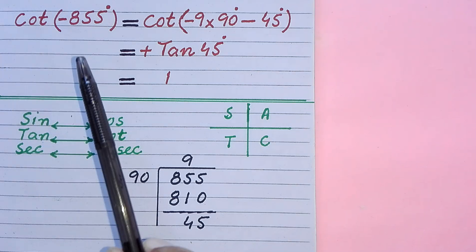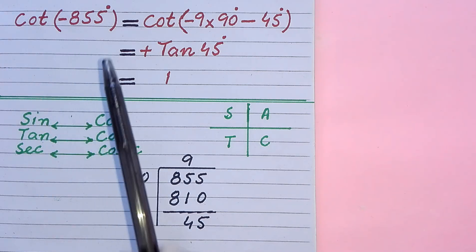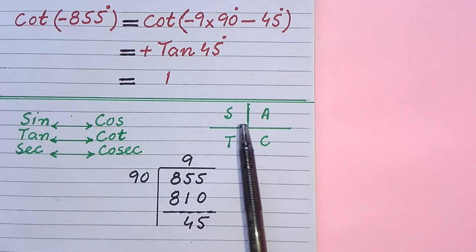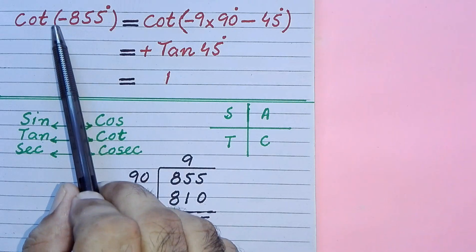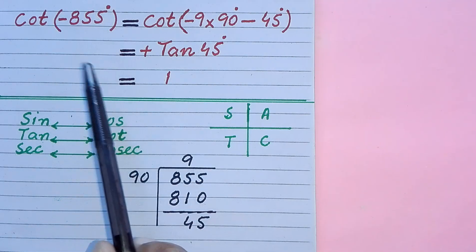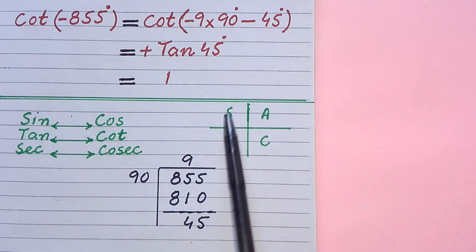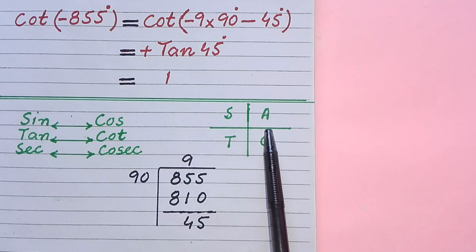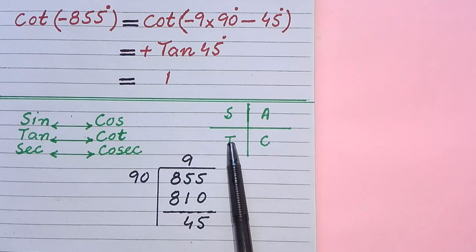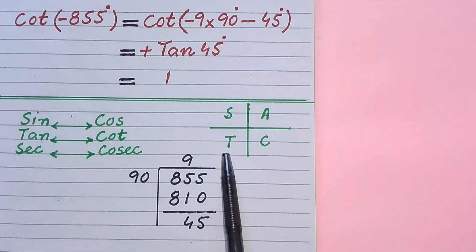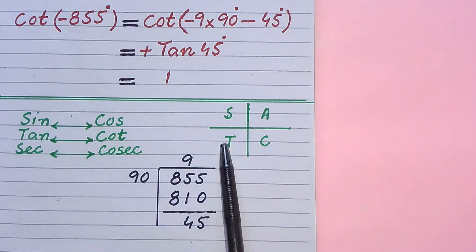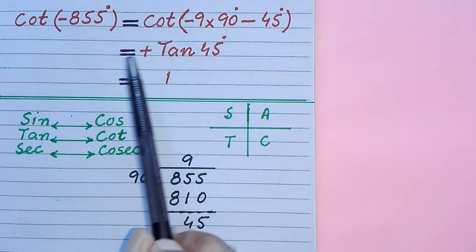First we decide about the sign of the given function, and it is done with the help of the Cartesian plane. Our angle is minus 855 degrees. The minus means we move in the clockwise direction: 360 degrees, 720 degrees, 810 degrees, and 855 degrees. This means 855 belongs to the third quadrant, where tan and its reciprocal cot are positive and all other trigonometric functions are negative. Our function is cot, which is positive here, so the sign is plus.